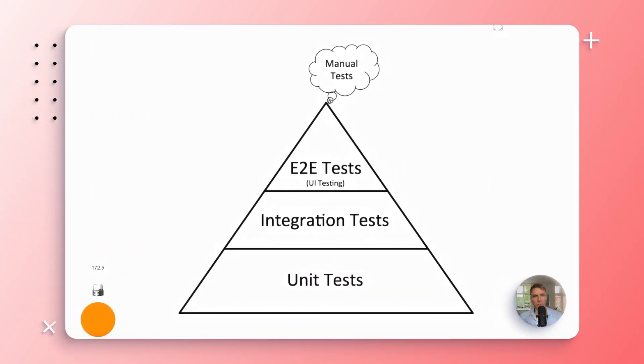Testing is extremely important and it's definitely something you should be thinking about from the very start when designing your architecture. There are a number of ways to think about the approach to testing, and I think that the test pyramid, which I believe Martin Fowler was the first one to come up with, is a good place to start.